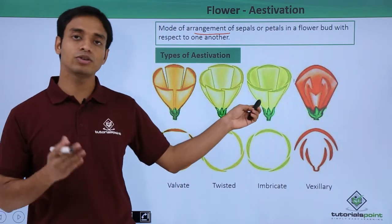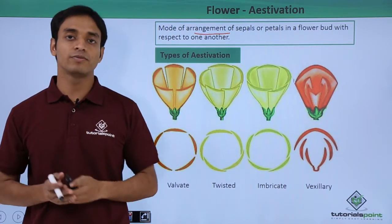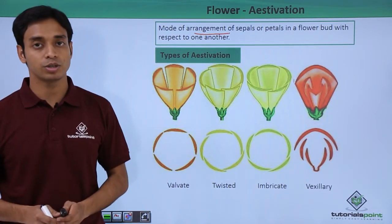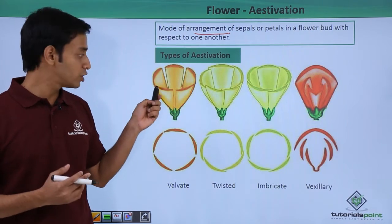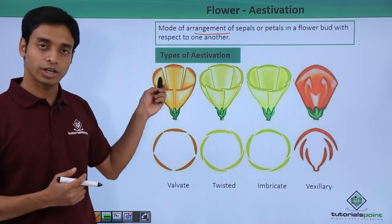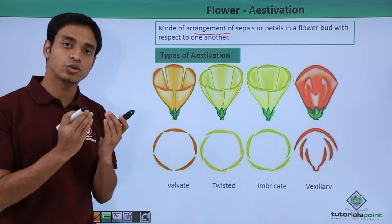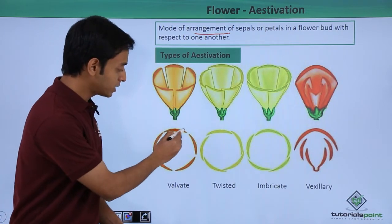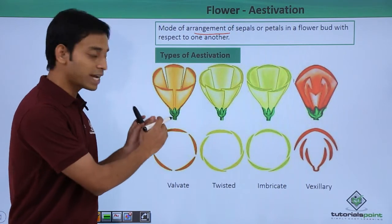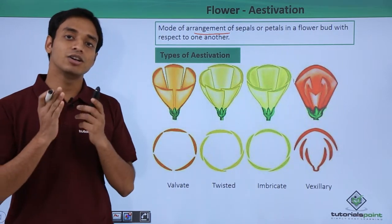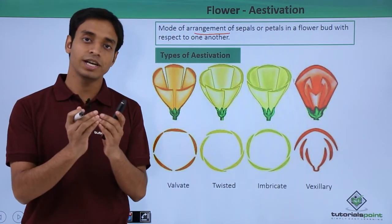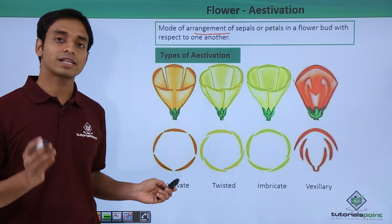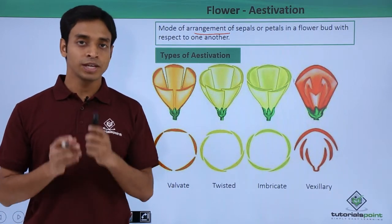Aestivation can be of four general types. The first type is known as the valvate type of aestivation. Here all the petals — you can see there are five petals — just touch one another. They are not fused and they do not overlap; they are simply adjacent to one another.